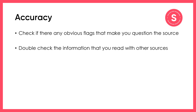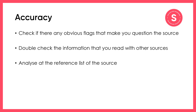Another way to assess whether a source is accurate is to double check the information that you read — look at other sources to see if they have similar information. Thirdly, you can analyse the reference list of the source to assess how accurate it is. We'll come back to this idea later and explain it further.